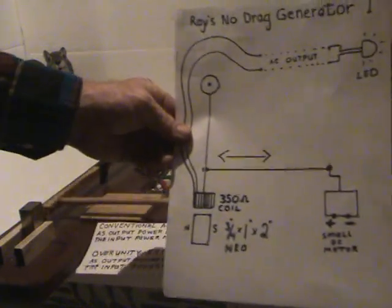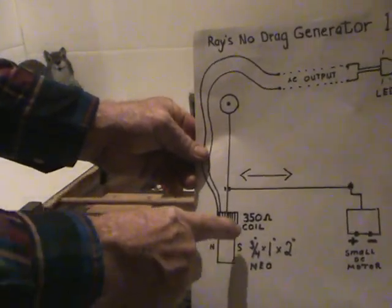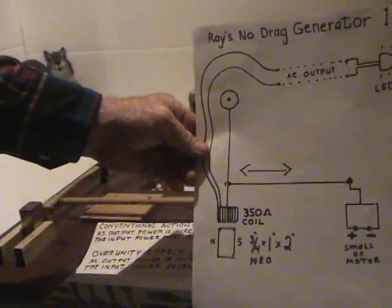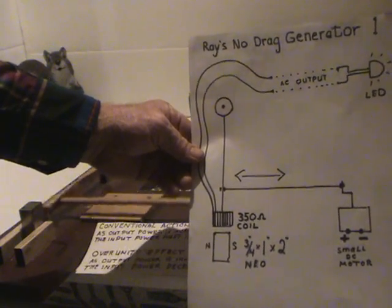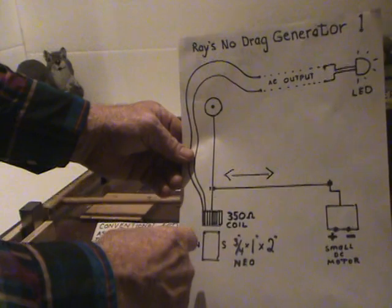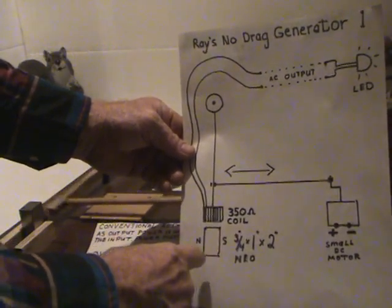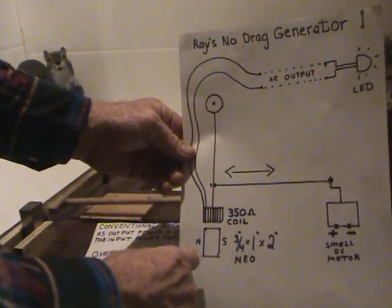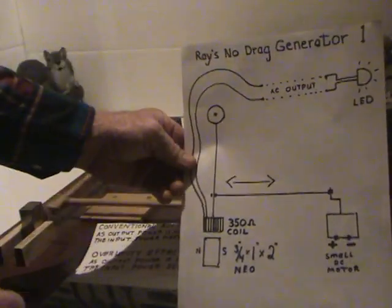This is the setup here. The small coil is about 350 ohms — they're called a pickup coil. It's moving back and forth through the field. You can see how the magnets are set, and your AC output goes to the LED.